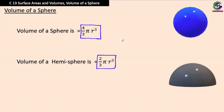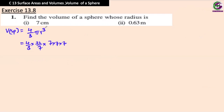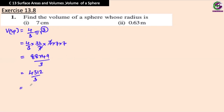Let's see the first question. Find the volume of a sphere whose radius is 7 centimeters. We apply volume = 4/3 π r³, which is 4/3 × 22/7 × 7 × 7 × 7. The 7s cancel to give 88 × 49 / 3 = 4312/3. We keep it as a mixed number since 4312 is not divisible by 3.